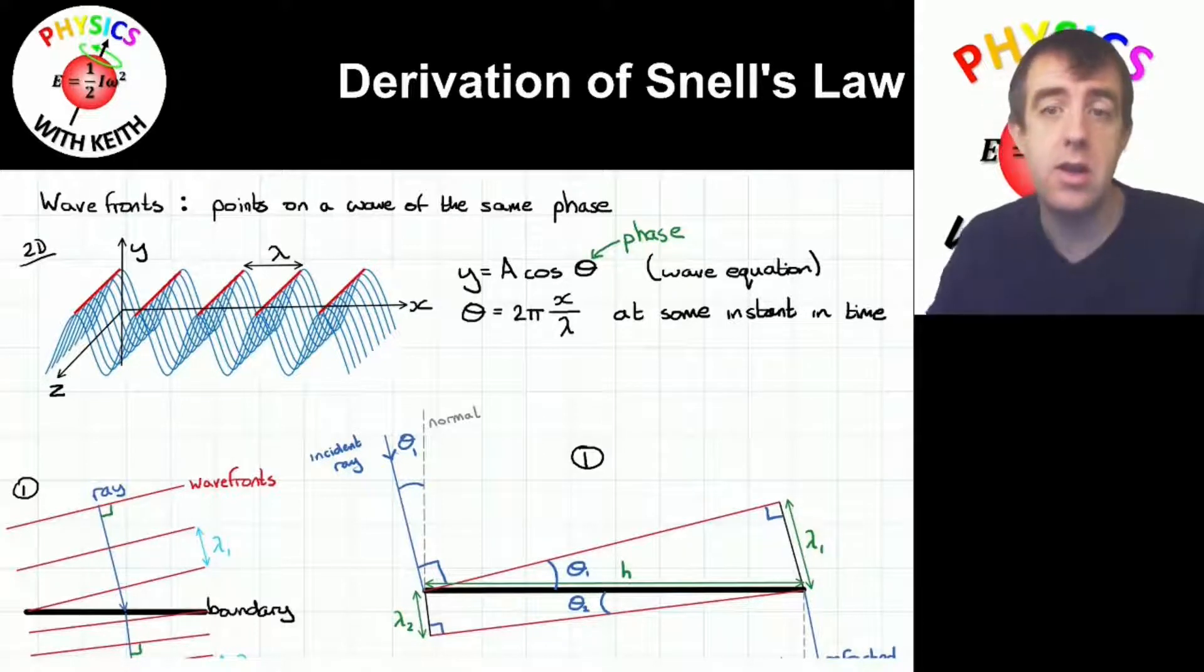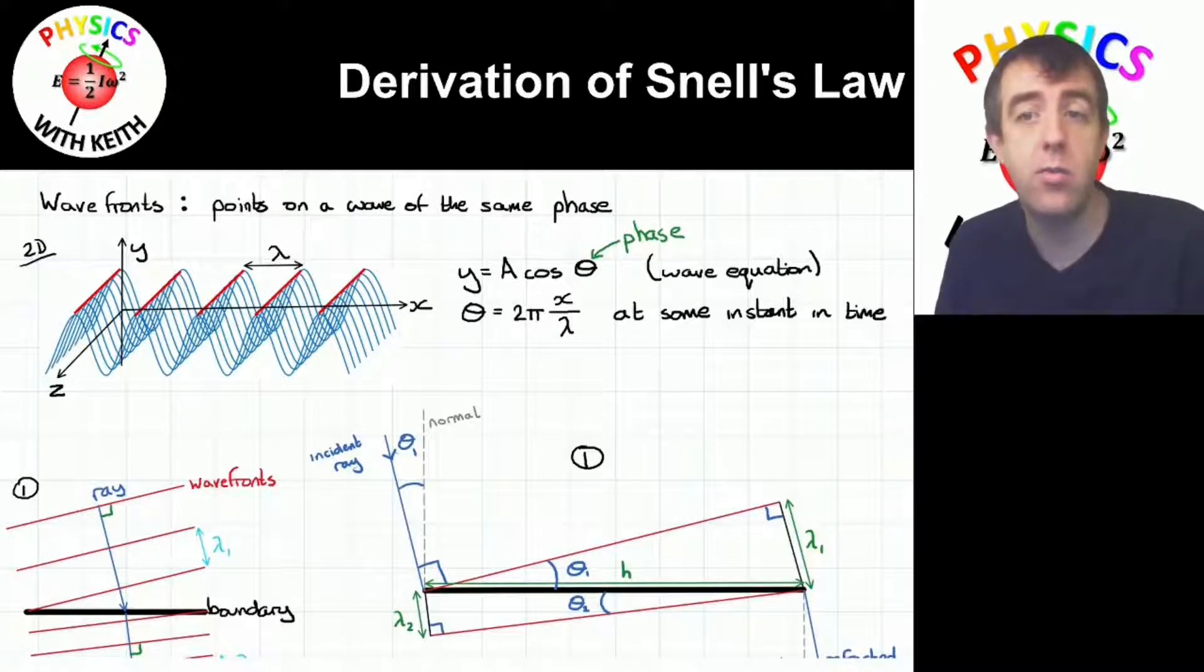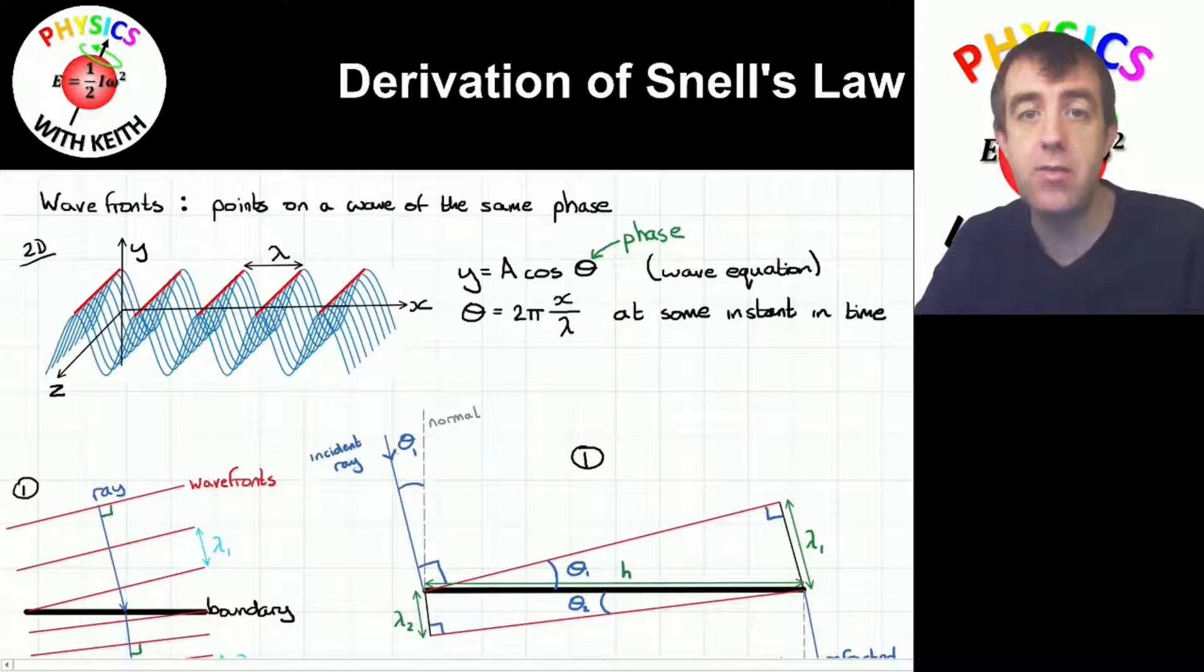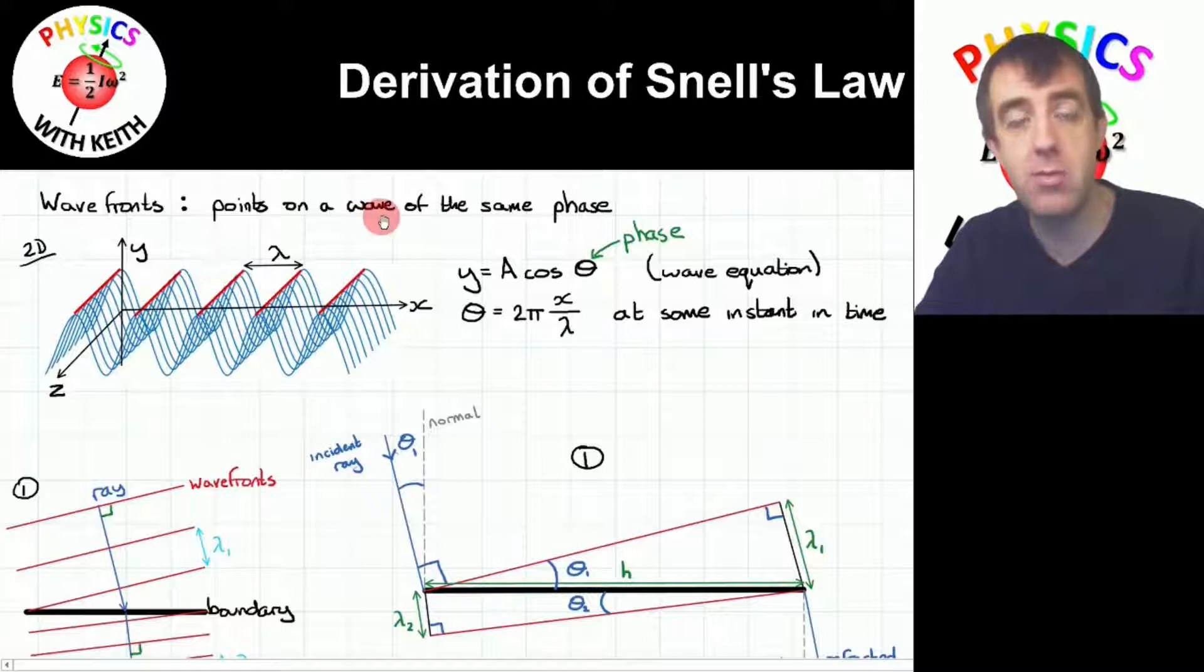A wave front is a point on a wave with the same phase. What I mean by that is if I connect together all points on a wave with the same phase in two dimensions, it forms a one-dimensional line. If I have a three-dimensional wave, then my wave fronts will form a two-dimensional surface.